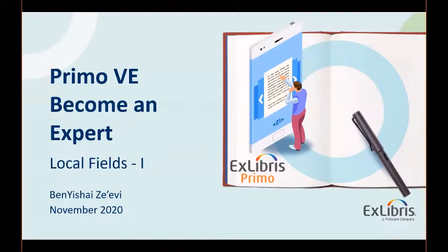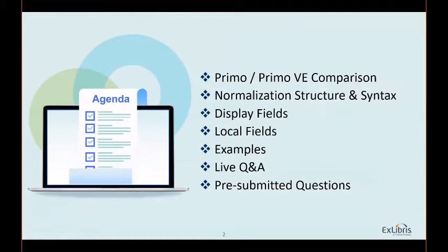This session will begin with a background comparison of display and local field configuration in PRIMO and PRIMO V. There will be a review of the structure and syntax of PRIMO V normalization rules, which are different from the normalization sets and rules you are familiar with in PRIMO back office. This may actually be found simpler for PRIMO institutions entitled to total care service that have not gotten used to working with data normalization in PRIMO back office. We will then focus on the implementation of normalization rules in PRIMO V configuration, adjusting display fields and creating additional local fields that can be used for display, search, and facet.